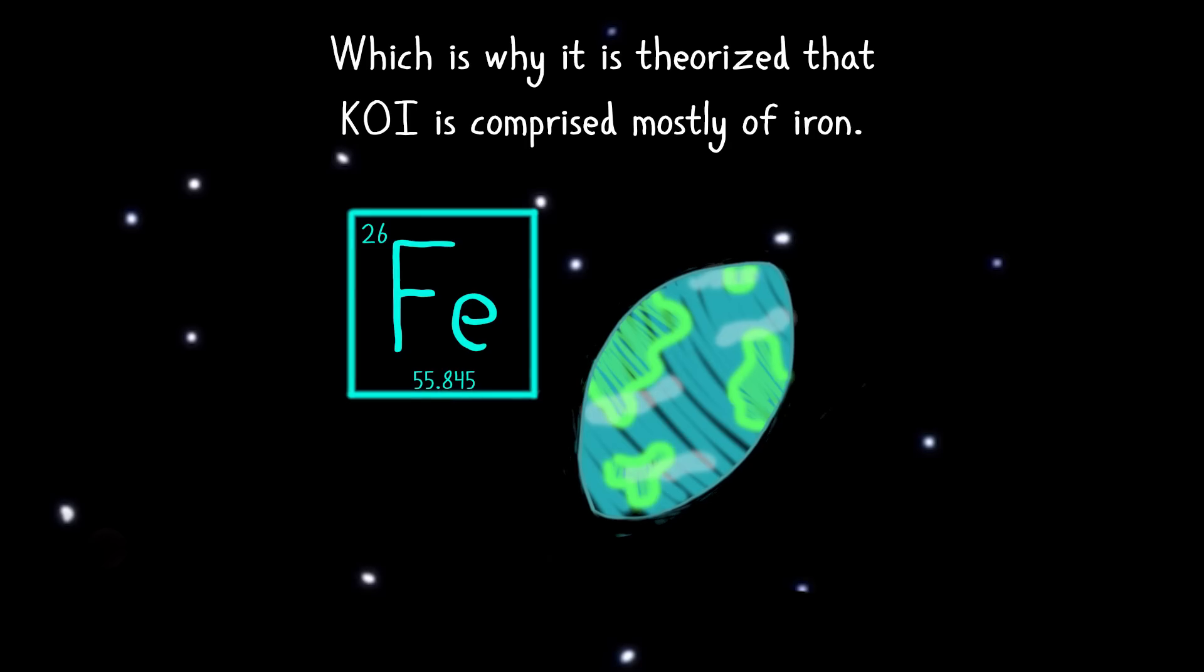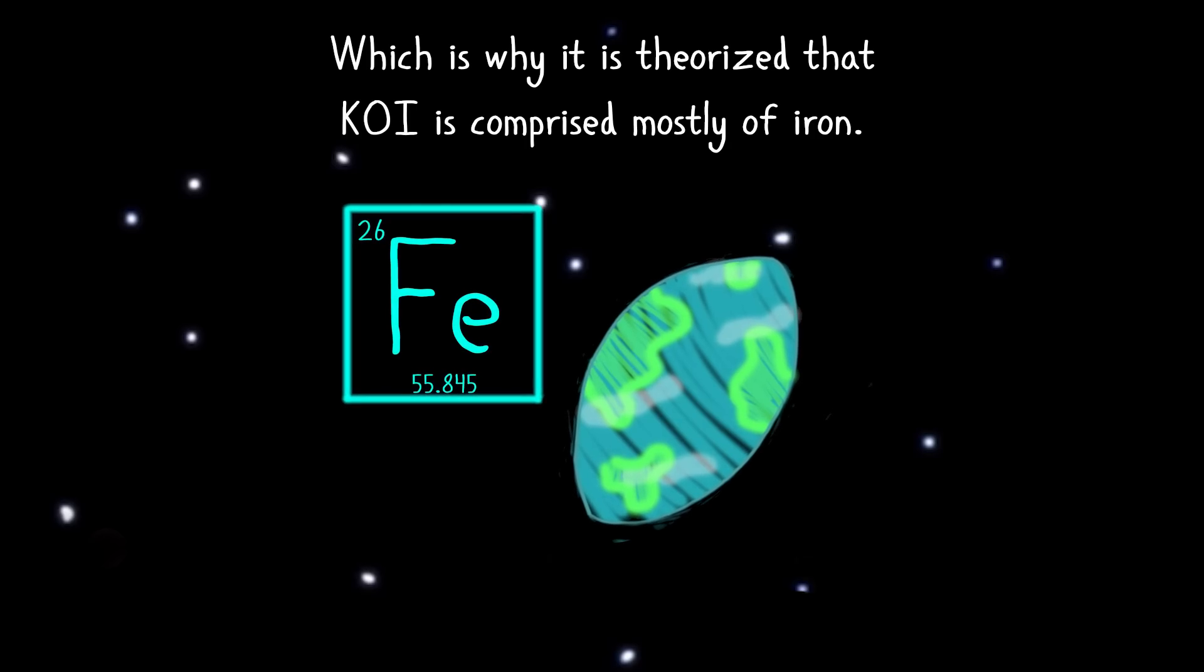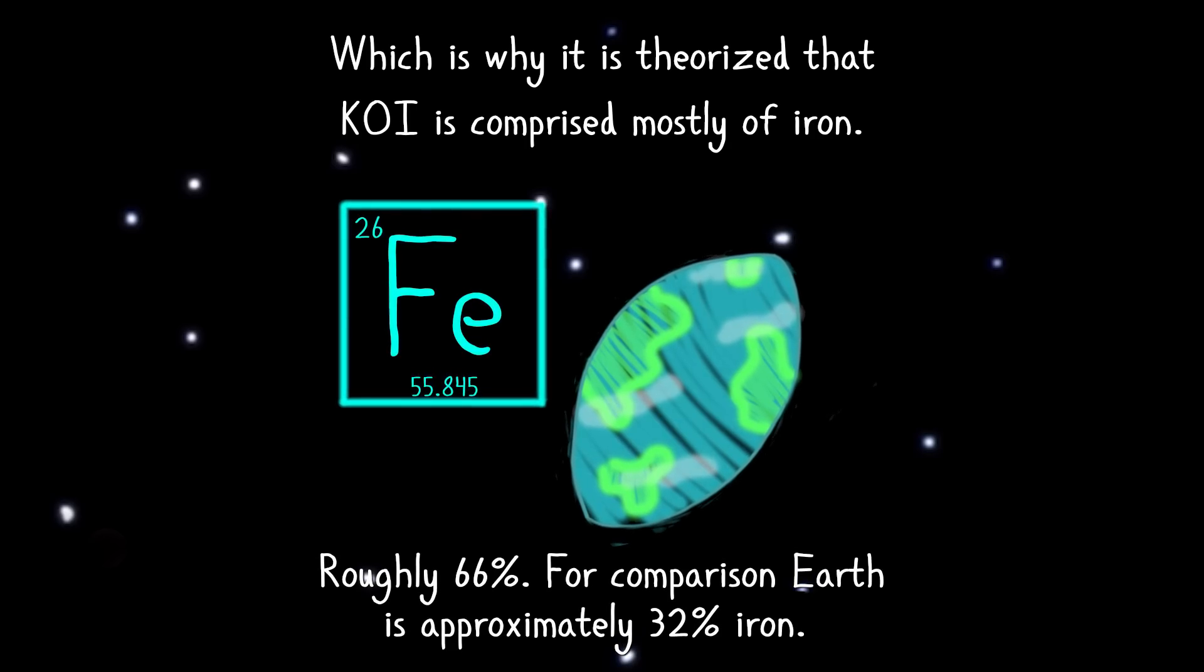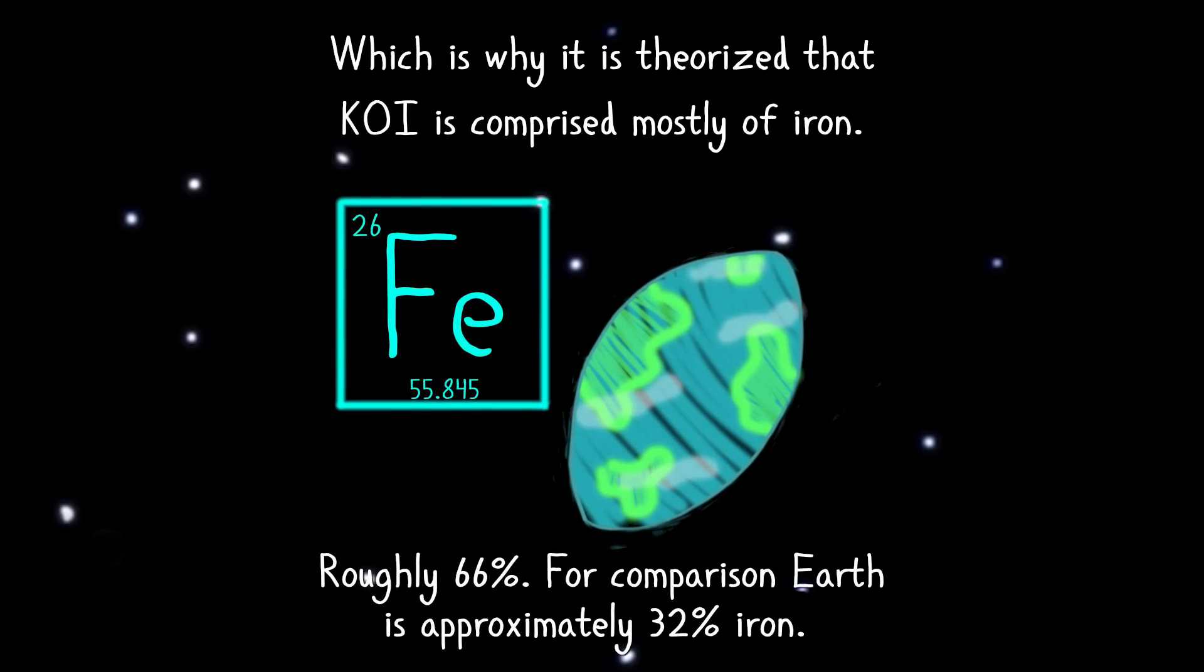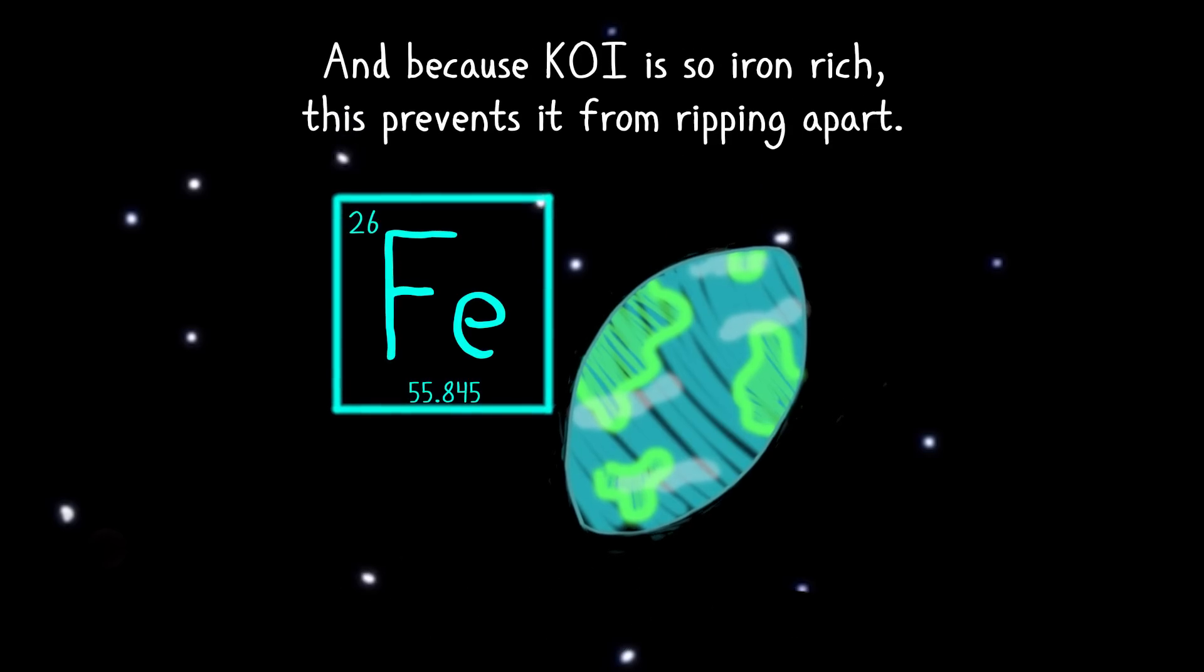Which is why it is theorized that KOI is comprised mostly of iron. Roughly 66%. For comparison, Earth is approximately 32% iron. And because KOI is so iron-rich, this prevents it from ripping apart.